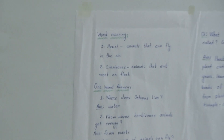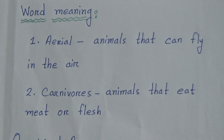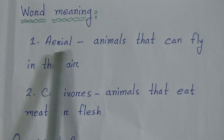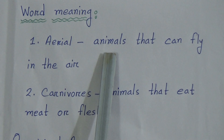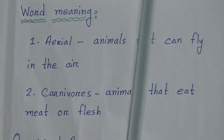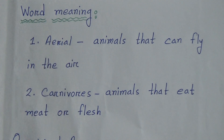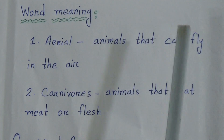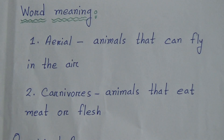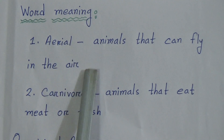You can see I have written here word meaning, one-word answers, and question answer of Chapter 3. Here are only two words and their meanings. Number one word is 'Arial.' Arial meaning is: animals that can fly in the air. Students, I didn't use capital letters for word meaning — we will start with small letters — and I didn't use a full stop here.